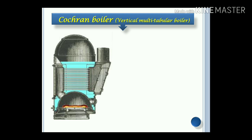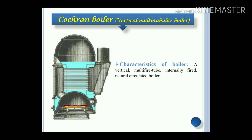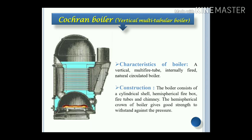Let's see the figure of the Cochran boiler. As per the classification of the boiler, according to the geometric orientation, it will be a vertical tube boiler, multi-fire tube boiler, internal fired and natural circulation kind of boiler. The boiler consists of a cylindrical shell, hemispherical firebox, fire tubes and chimney.